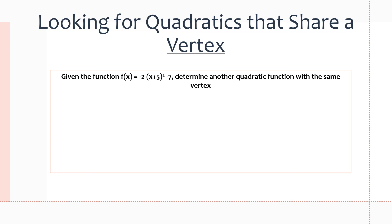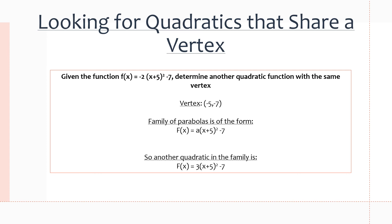So if it was (x - 5), the vertex would be at +5. But since it's (x + 5), the vertex is -5. The family of parabolas is of the form f(x) = a(x + 5)² - 7 — we just took vertex form and substituted the vertex in. Another quadratic in the family is f(x) = 3(x + 5)² - 7. You can substitute any value in for a and they are still the same family of quadratic functions, because the vertex is exactly the same.